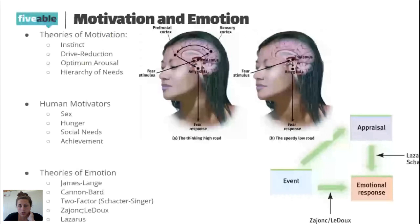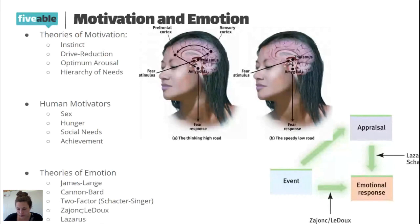Drive reduction theory example: I have a need that must be met — I'm thirsty. My thirst is my drive, my need is water. To reduce that drive, I get a glass of water. I eat food to reduce the drive of needing food.